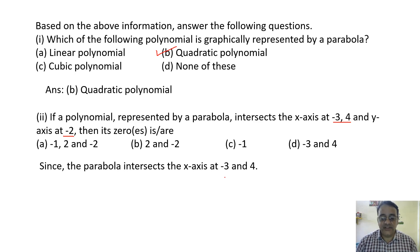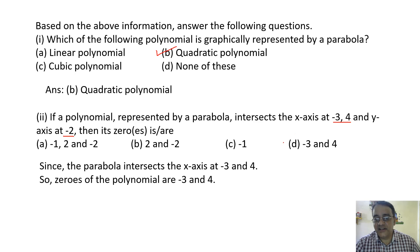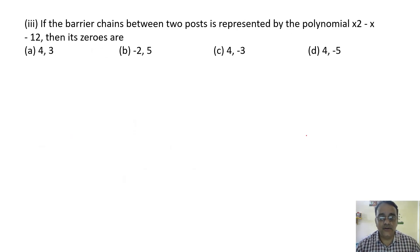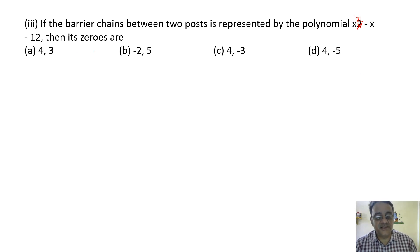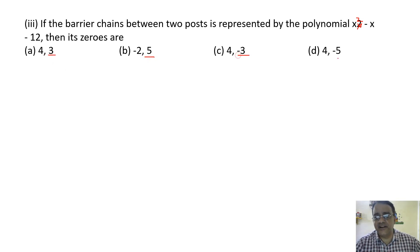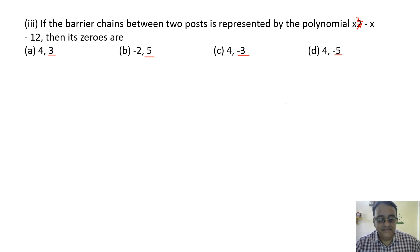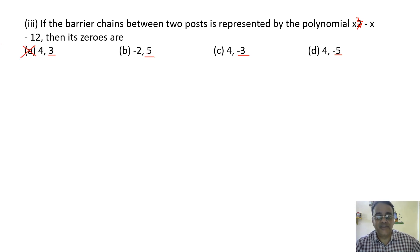Since it intersects the x-axis at minus 3 and 4, those are the zeros. Correct option is D. For the barrier chain represented by x squared minus x minus 12, using the elimination method: substituting x equals minus 3 gives 9 plus 3 minus 12 equals zero — tick mark.